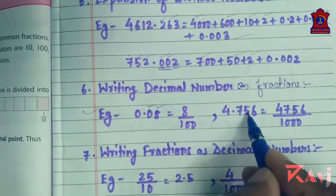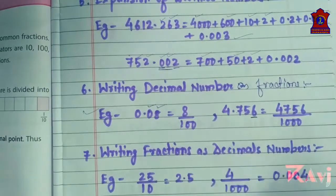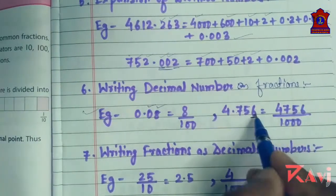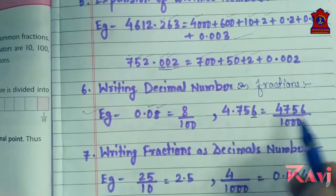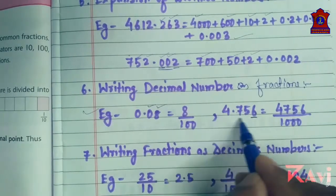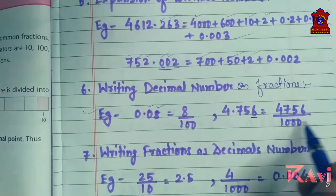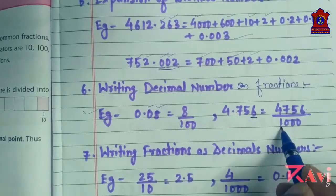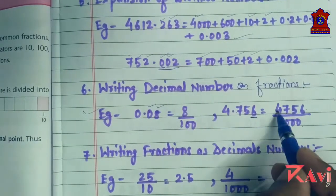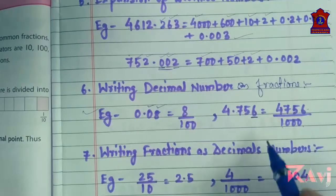For 4.756, what is the last digit? 6. What is the place value of 6? Tenths, hundredths, thousandths. So write all the digits together: 4, 7, 5, 6, followed by the place value of the last digit — 1000. So 4756/1000. These are the basics of decimals; you need to keep this in mind.